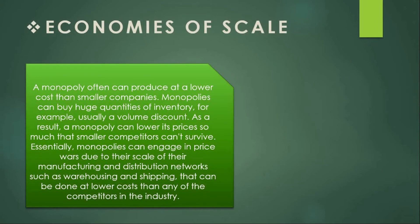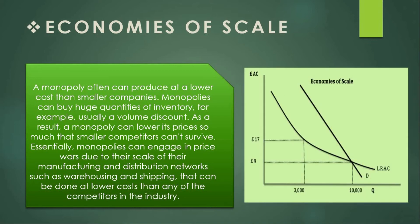The fourth and foremost feature is economies of scale. A monopoly can often produce at a lower cost than smaller companies, as monopolies can buy huge quantities of inventory — usually at a volume discount. As a result, a monopoly can lower its price so much that smaller competitors cannot survive. In the graph shown, the LRAC is slowly downward sloping and touches the demand curve at a quantity of 10,000, where the price is 9 pounds.